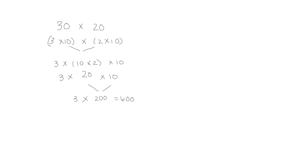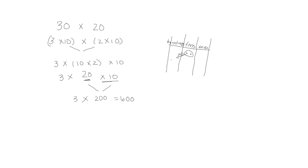Let's also show it on a place value chart. We had 2 tens and we're going to multiply by 10, so that means it's going to go to the hundreds column, and we're going to do it 3 times. So we have 6 hundreds, or 600 — the same answer as before.